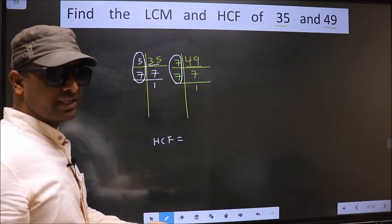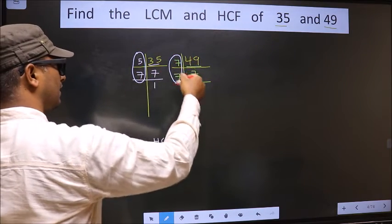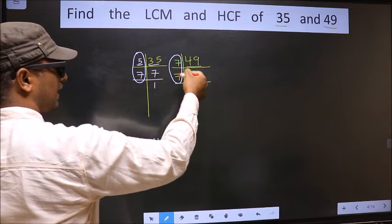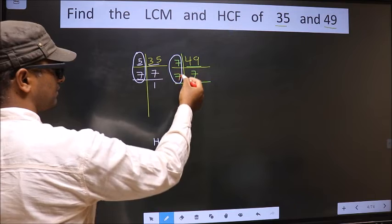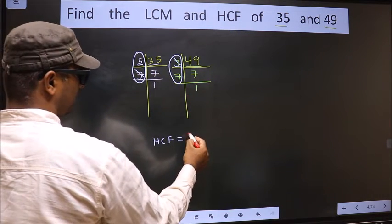So now let us find the numbers which are present here and here. Starting with the number 5. Do we have 5 here? No. Go to the next number 7. Do we have 7 here? Yes. So you cut 7 and write here.